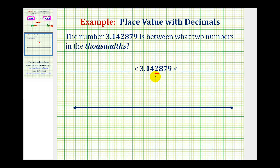So we're trying to find the two numbers that only contain the thousandths place value that the given number would be between.